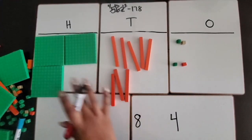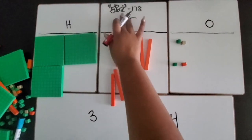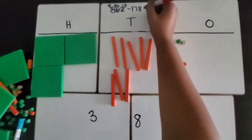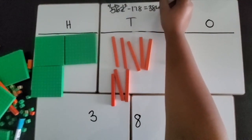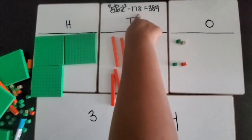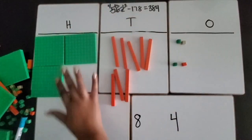After I did all my subtracting, the difference between 562 and 178 is 384. That is the difference. We subtracted one three-digit number from another three-digit number using base 10 blocks.